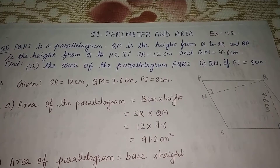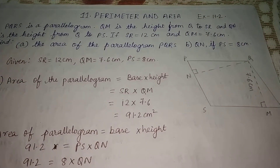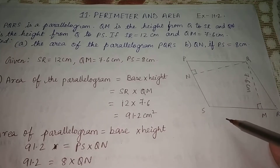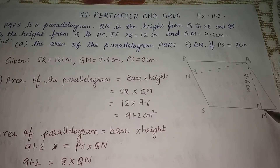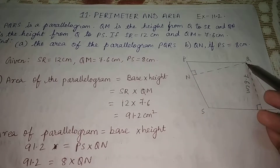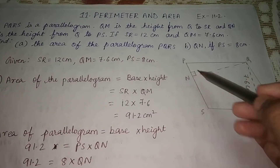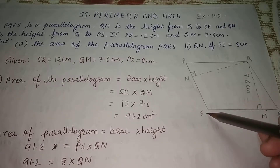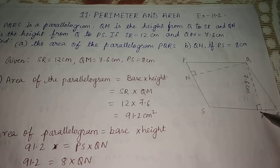You can see the figure given here. In the question, PQRS is a parallelogram. QM is the height from Q to SR — it is perpendicular to SR. QN is the height from Q to PS — it is perpendicular to PS. SR and QM are given, and we are told to find the area of the parallelogram.